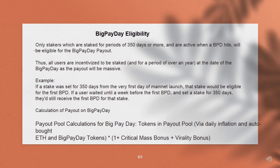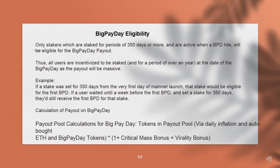Example: if a stake was set for 350 days from the very first day of mainnet launch, that stake would be eligible for the first BPD. If a user waited until a week before the first BPD and set a stake for 350 days, they'd still receive the first BPD for that stake. Calculation of payout on big payday: payout pool = tokens in payout pool via daily inflation and auto-bought ETH, and big payday tokens × (1 + critical mass bonus + virality bonus).